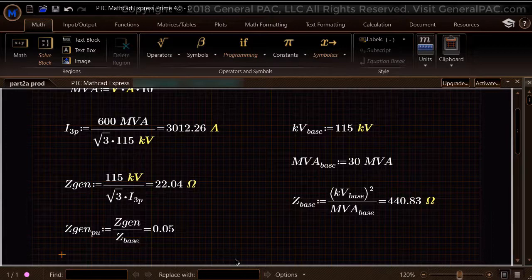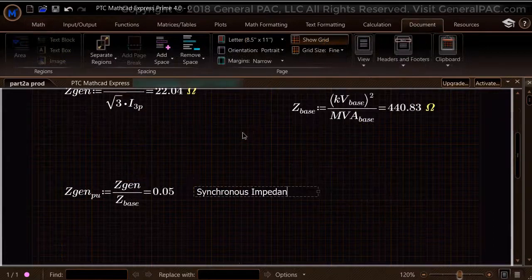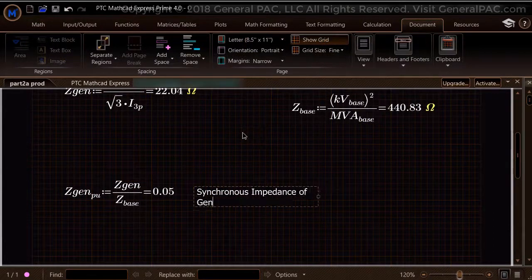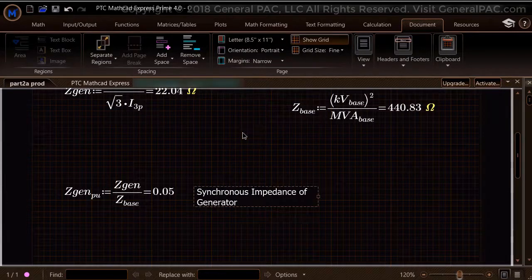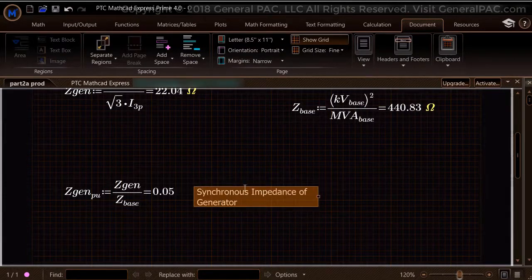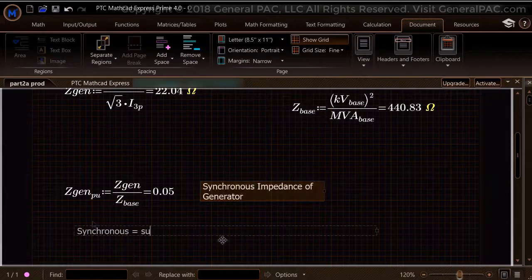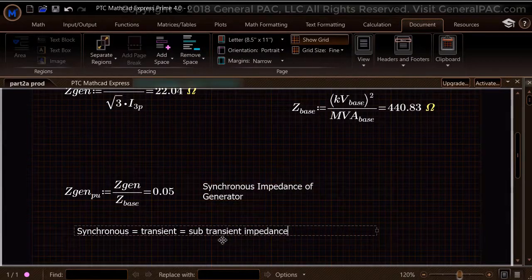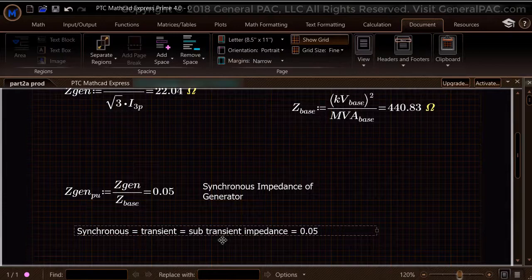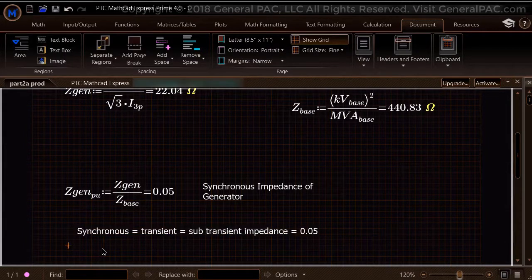The per unit system is unitless. This parameter can be considered as the synchronous impedance of the generator. For simplification purposes, we shall only consider the synchronous impedance. To drive this point further, we shall set the transient and sub-transient impedances to equal 0.05 per unit as well.